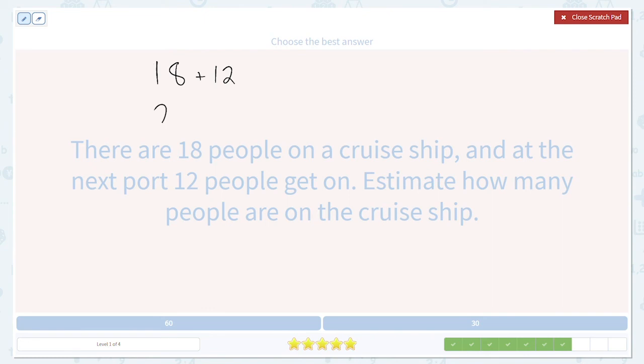18 will round up to 20 people because 8 is more than 5. And 12 will round down to 10 because 2 is less than 5. So this gives us a total of 30 people on the cruise ship.